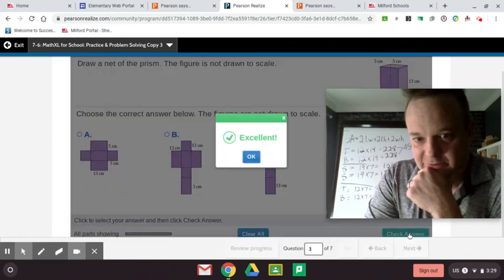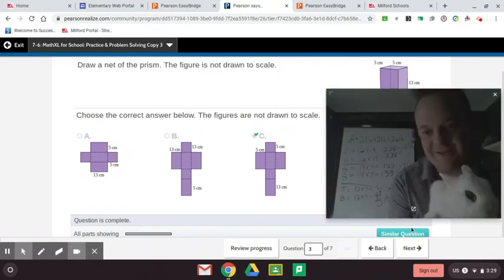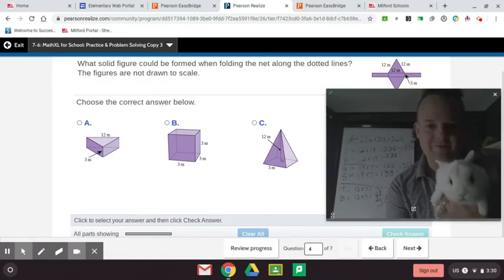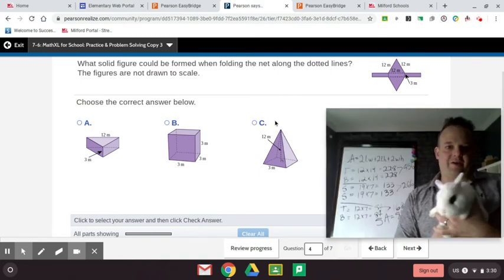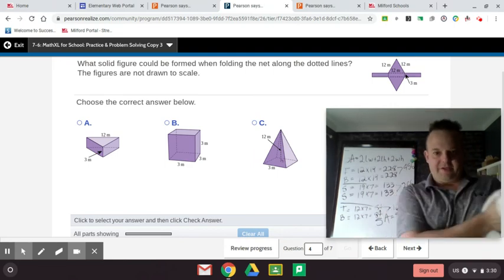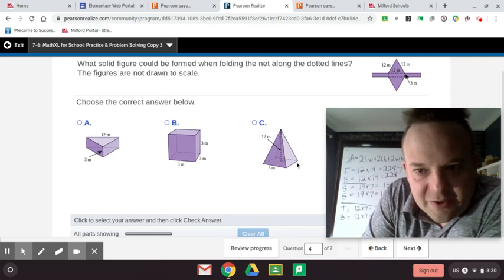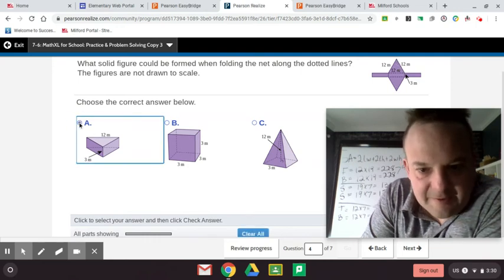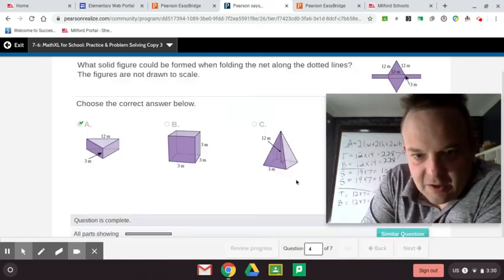Alright. Bubbles, where are you? Don't be chewing up my piano. We got it. When we get it I'll show you Bubbles. Alright, now we're on to the next one. So which solid figure could be formed when folding the net along the dotted lines? The figures are not drawn to scale. So, looks like the bottom is 12 by 3. That looks like a square pyramid. So no, this is a prism. You see how these two bases, this is a triangular prism. So it'll be right there.